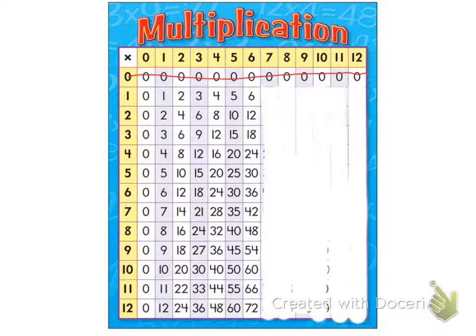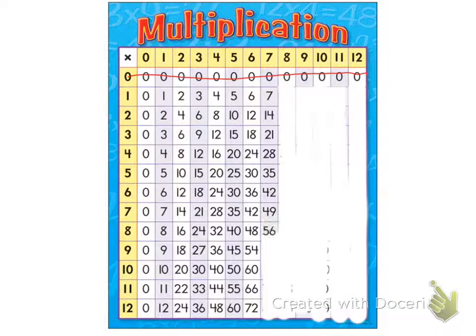What are the multiples of seven? Seven, fourteen, twenty-one, twenty-eight, thirty-five, forty-two, forty-nine, fifty-six, sixty-three, seventy, seventy-seven, eighty-four.